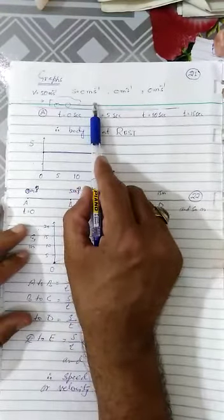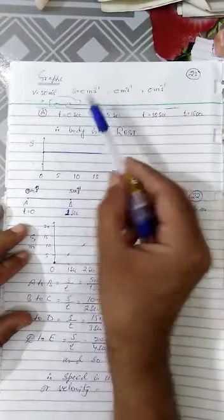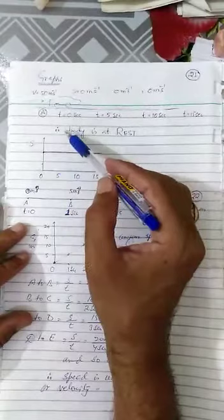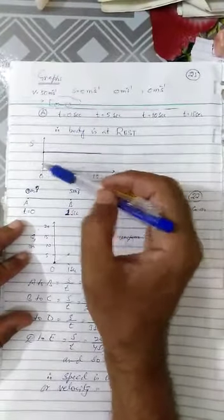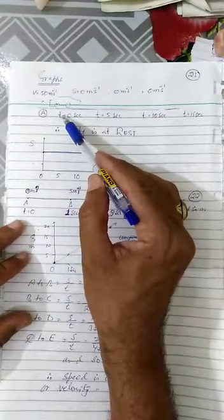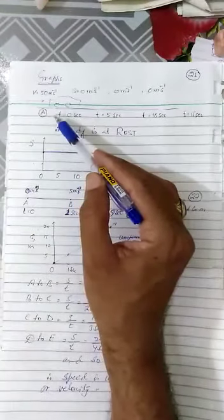But after this point, time passes by but car having no distance covered by the car. So it means if you draw this situation in the form of graph, we see that when time was zero, we were standing at this position A and car has traveled some distance.